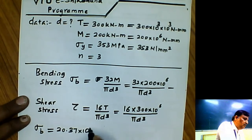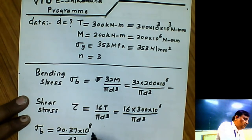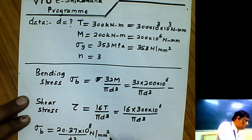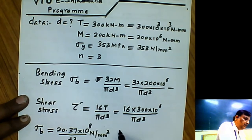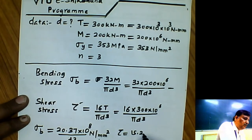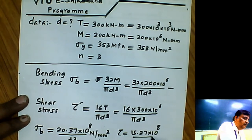So we will get the values of σ_B and shear stress τ in N/mm². τ is equal to 15.27 × 10⁸ / D³ N/mm².